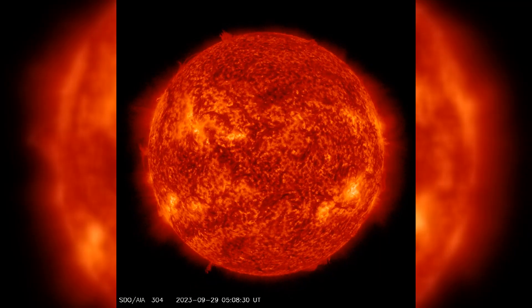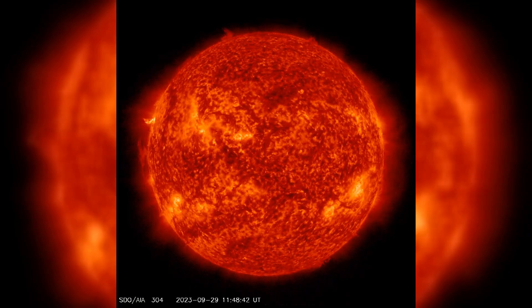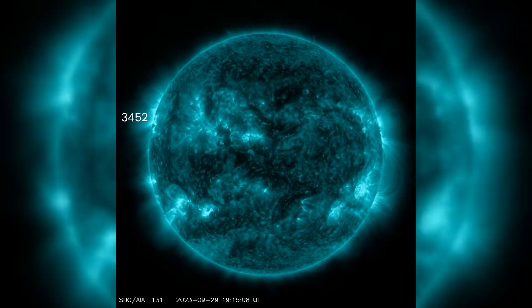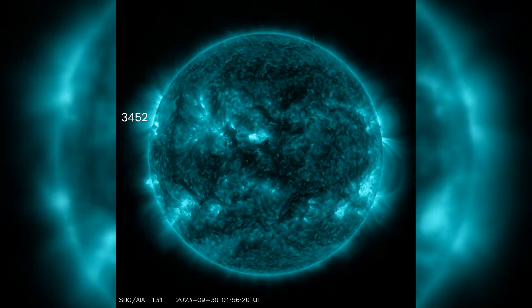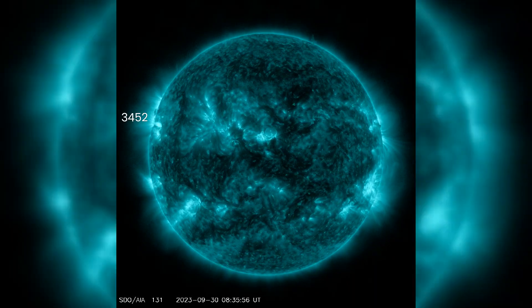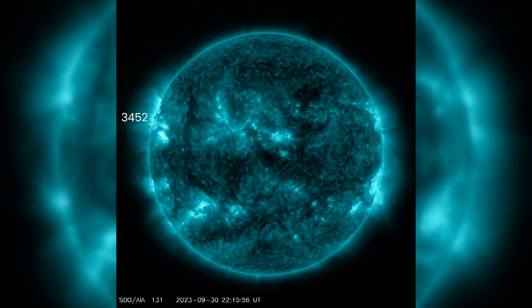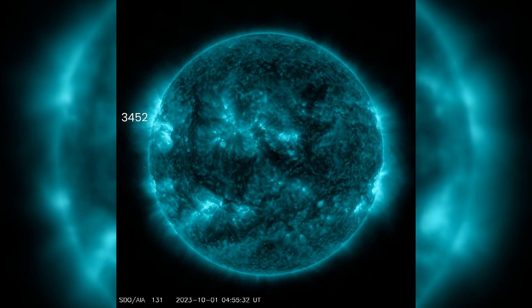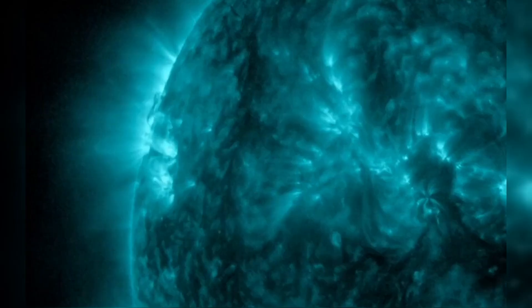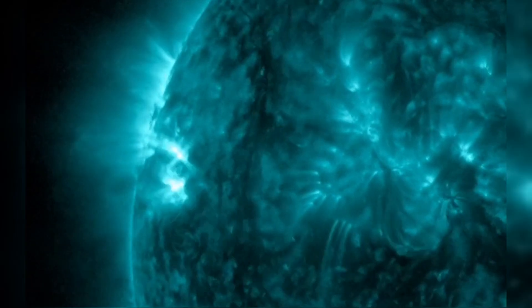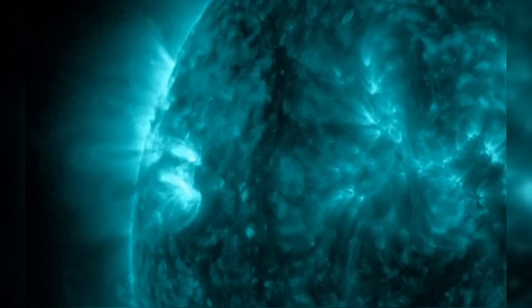In the past 24 hours, our sun has been putting on quite a show. Newly numbered region 3452 has taken the spotlight, unleashing a powerful M2.5 flare at around 132 Coordinated Universal Time. This region is growing rapidly, promising more excitement in the coming days.